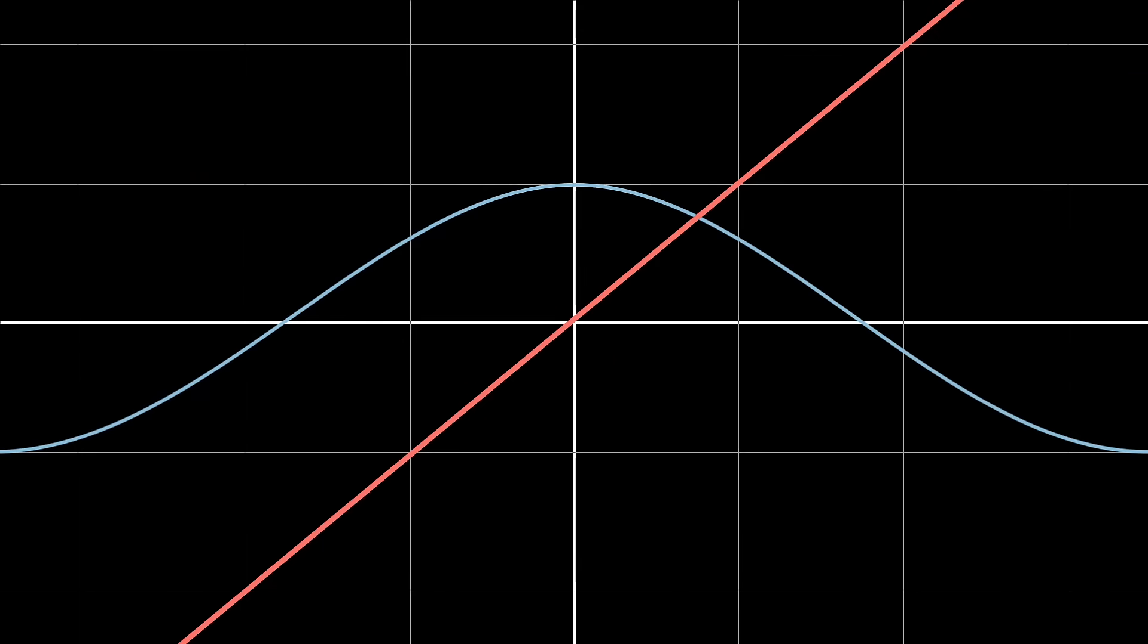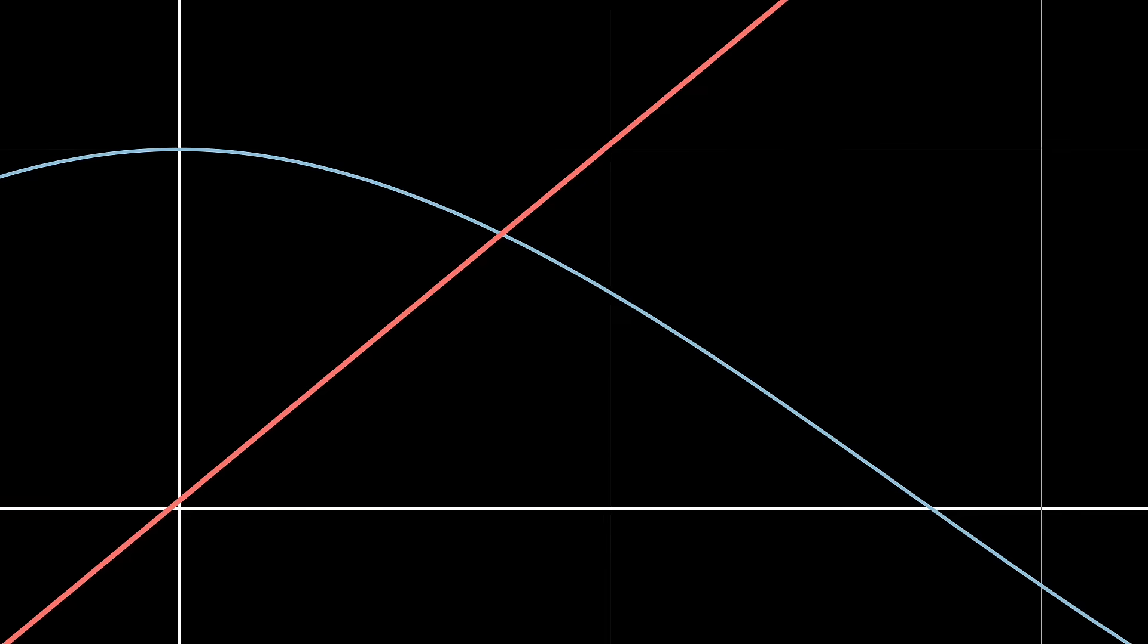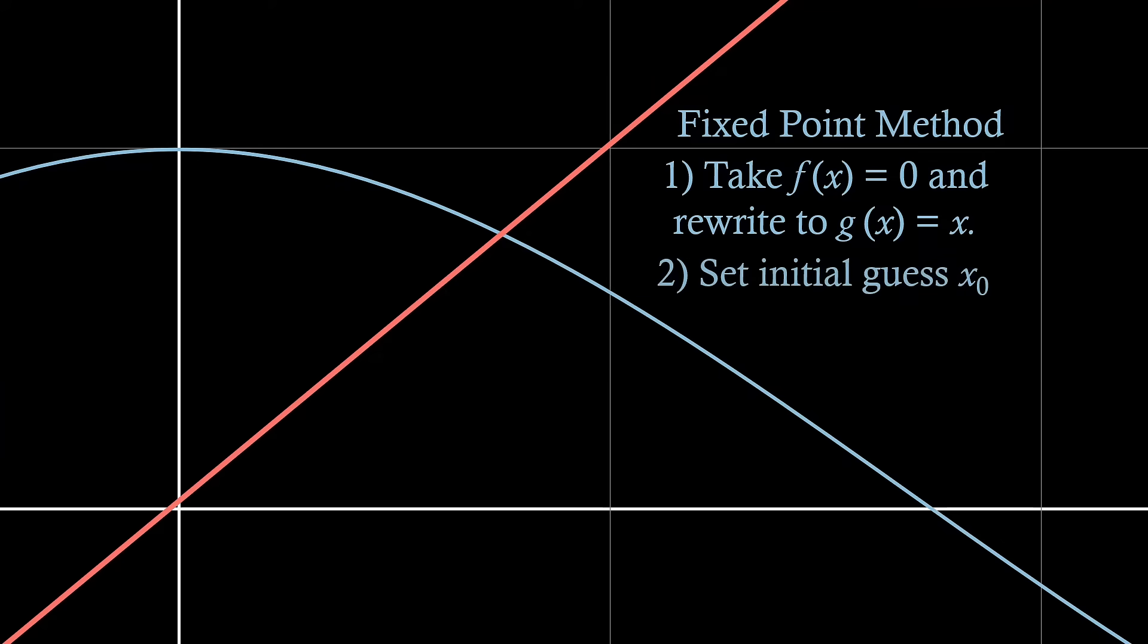We can then iterate upon this g of x function to find our root. We will see this visually in a second, but first we introduce this algorithm as the fixed-point iteration method. As we have seen, to perform this method, we first rearrange our f of x equals 0 function to establish a new function, g of x equals x. If we then set an initial guess close to the root and call this x0, then we finally iterate upon g of x using the formula xn plus 1 equals g of xn, with n denoting the iteration number as we saw with the bisection method before.